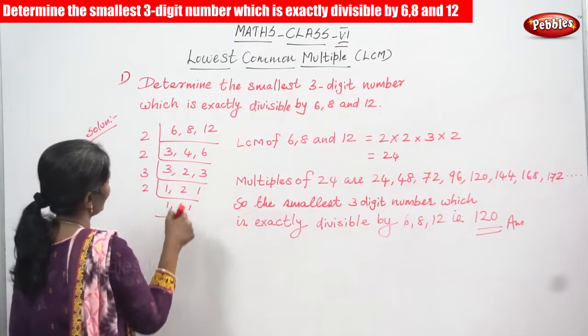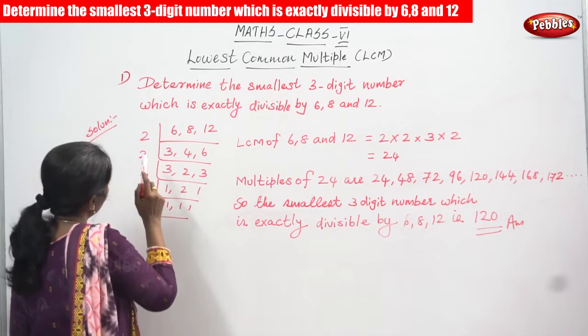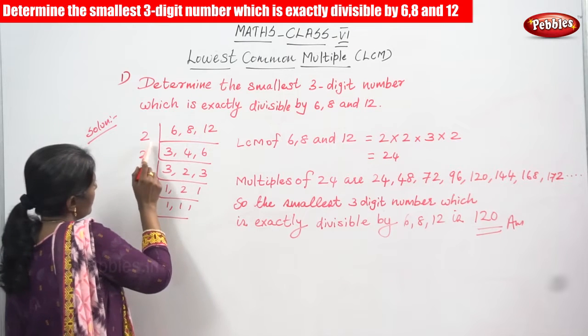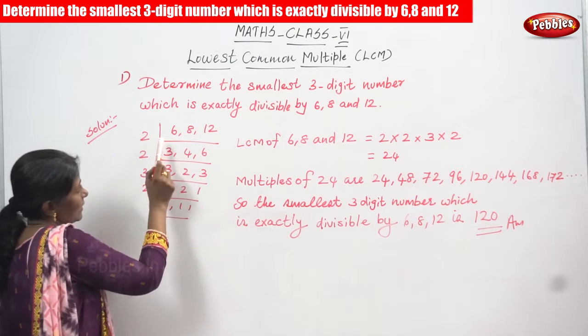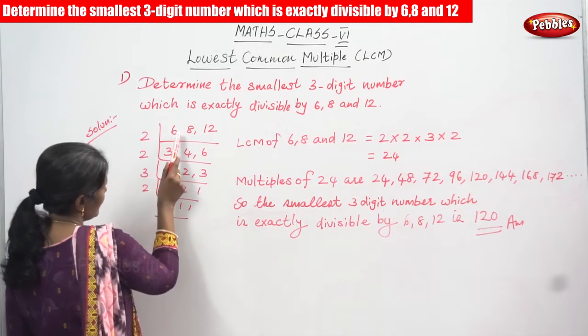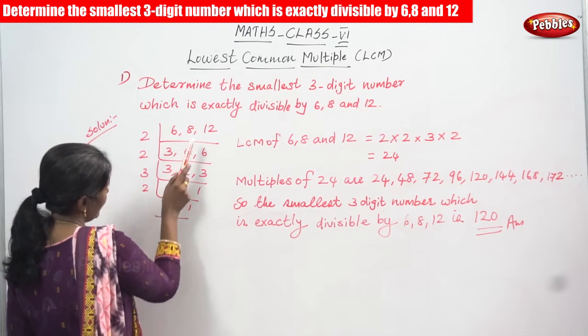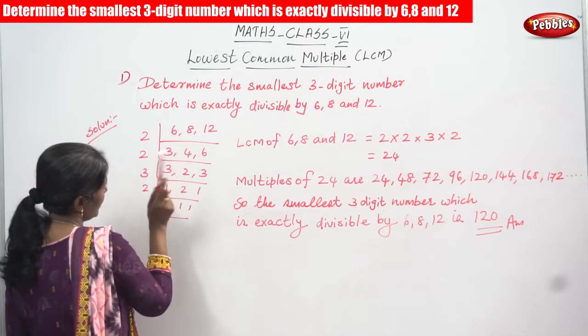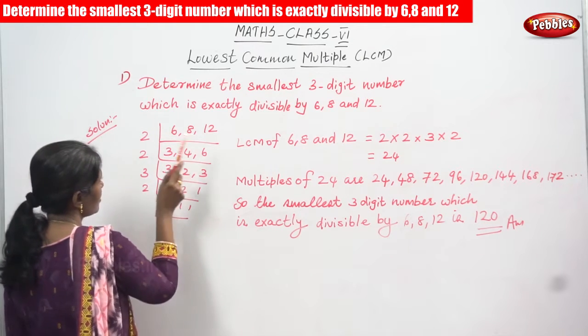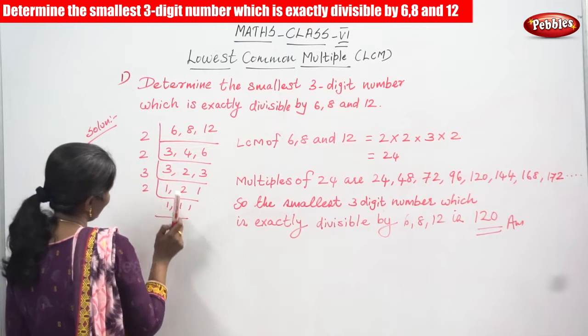We write 6, 8, and 12. These three numbers are going to be divided by 2. So 6 divided by 2 gives 3, 8 divided by 2 gives 4, and 12 divided by 2 gives 6.